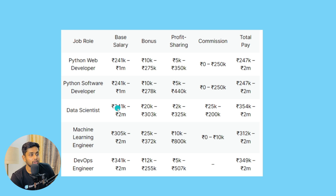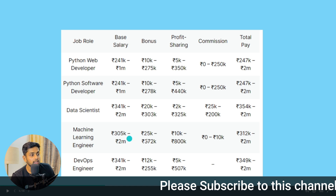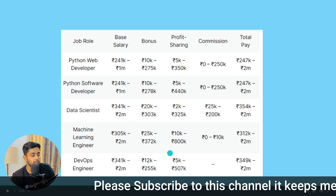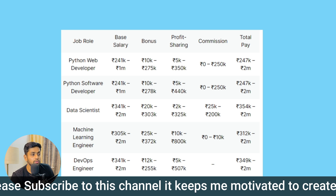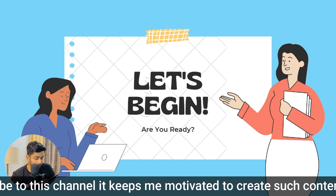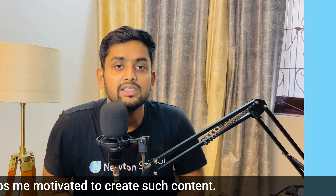Data Scientists are more highly paid because they deal with a lot of statistical data. The base salary is 241K to 2M, with bonuses of around 240K to 30K, and the average total pay is 344K to 2M. Machine Learning Engineers are also highly paid compared to web development and software development, with numbers starting at 312K. We also have DevOps Engineer, who handles hosting and deployment of applications.